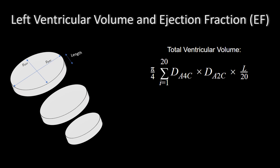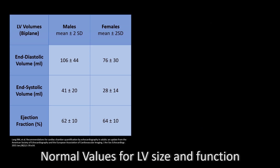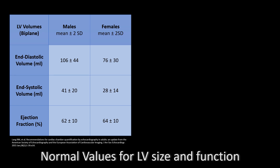After calculating the end-diastolic and end-systolic volumes, the ejection fraction is calculated by subtracting the end-systolic volume from the end-diastolic volume and dividing the result by the end-diastolic volume. The mean values with two standard deviations, taken from the American Society of Echocardiography guidelines, show gender variations. For males, the left ventricular end-diastolic volume is 106 ± 44 and the end-systolic volume is 41 ± 20. For females, the end-diastolic volume is 76 ± 30 and the end-systolic volume is 28 ± 14. The ejection fraction is 62 ± 10 for males and 64 ± 10 for females.